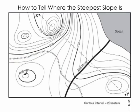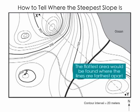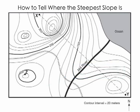On the other hand, occasionally we'll see a question about where there's the flattest slope. Of course, the opposite would be true. The flattest area would be found where the lines are furthest apart — so on this map, probably somewhere in this bottom left area. To recap: the steepest slope will be found where the lines are close together, because there's a big change in elevation over a short distance. The flattest slope would be found where the lines are very widely spaced.